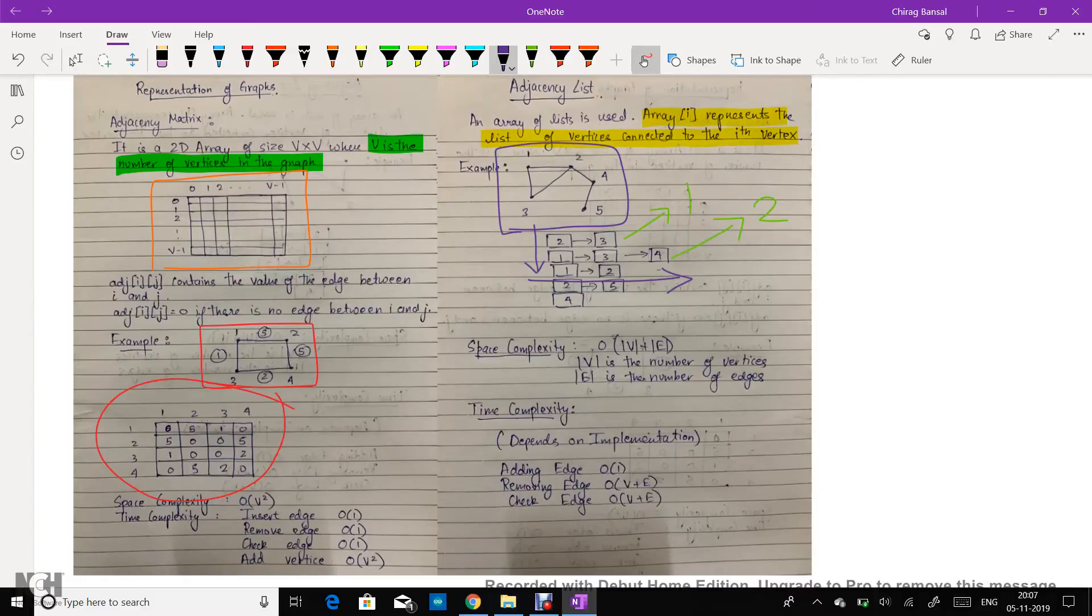Checking an edge also takes order v plus e time. As we go in the array to the point where we have that vertex, and then we go through that list. Therefore it takes order v plus e time.